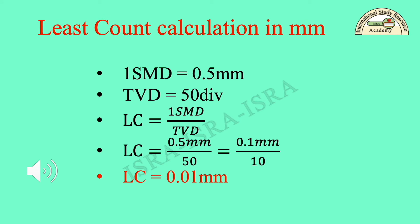Least count calculation in millimeters: 1 SMD is equal to 0.5 mm, and TVD is equal to 50 divisions. Least count LC is equal to 1 SMD over TVD, which is 0.5 mm over 50, equal to 0.1 mm over 10. Therefore least count LC is equal to 0.01 mm. This LC is in two decimal places in millimeters.